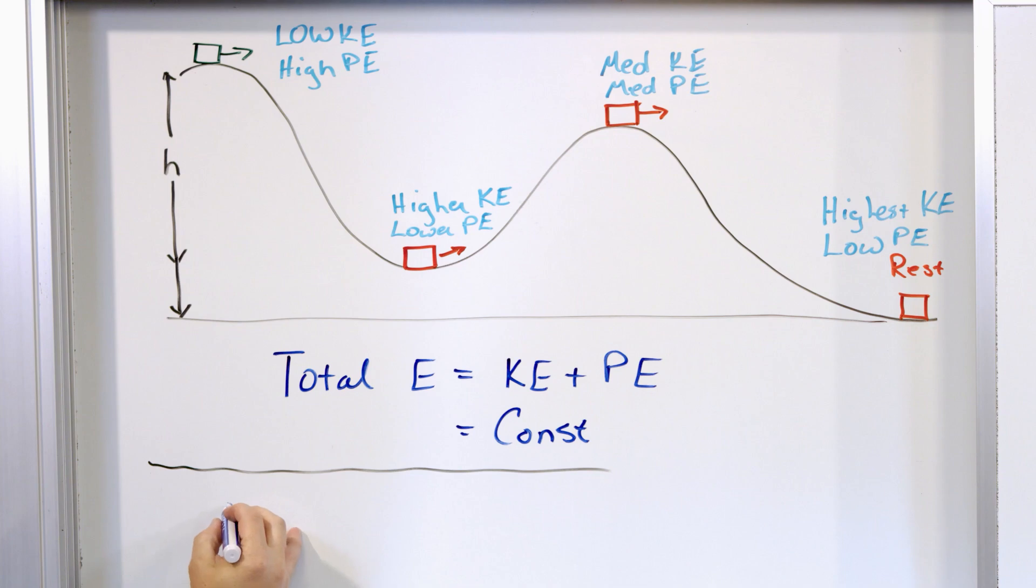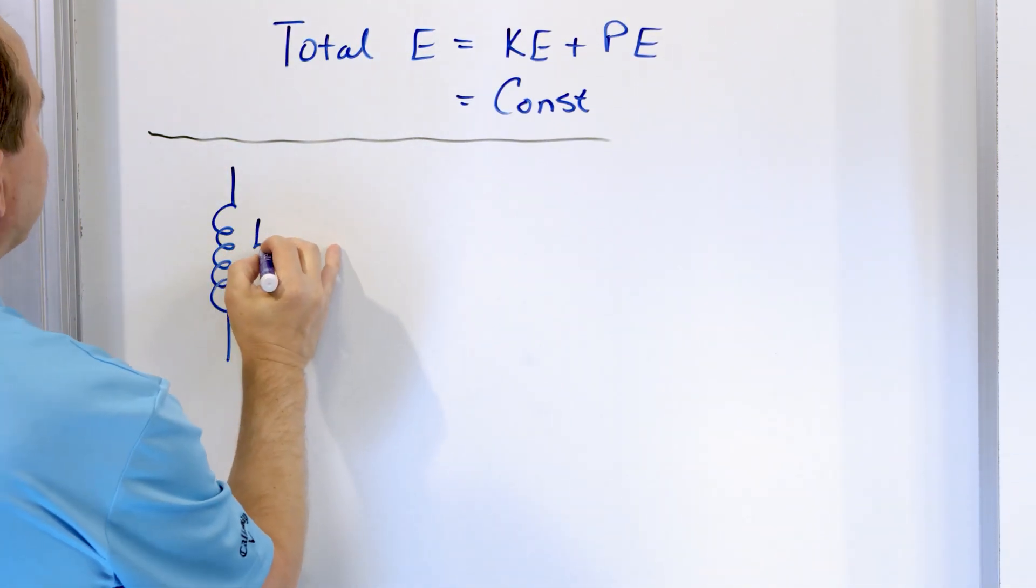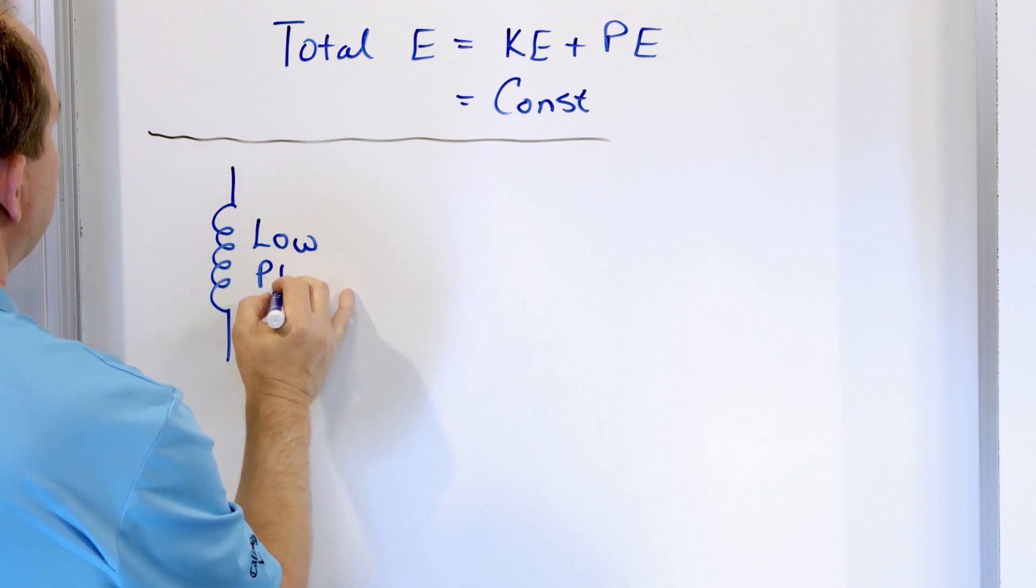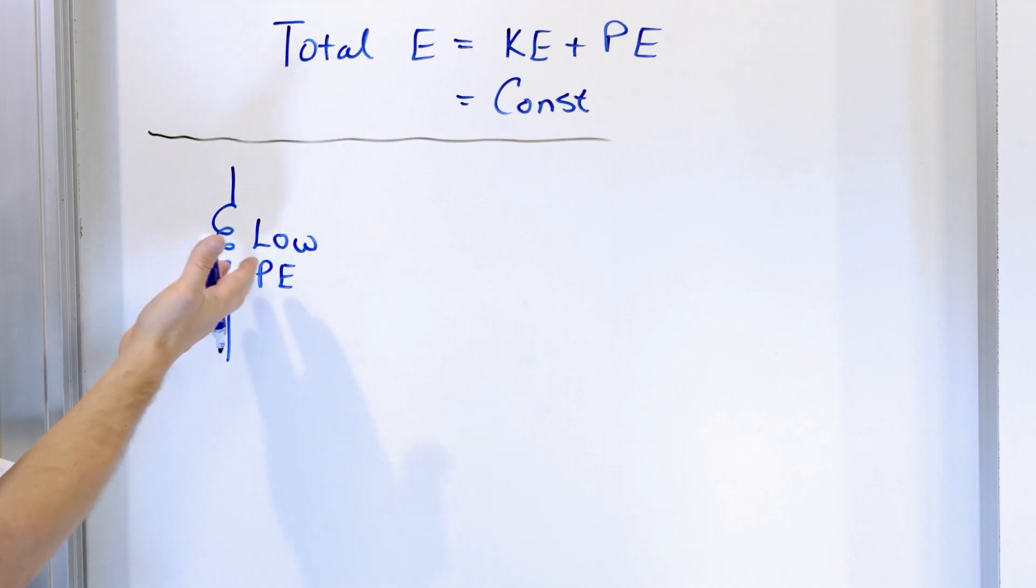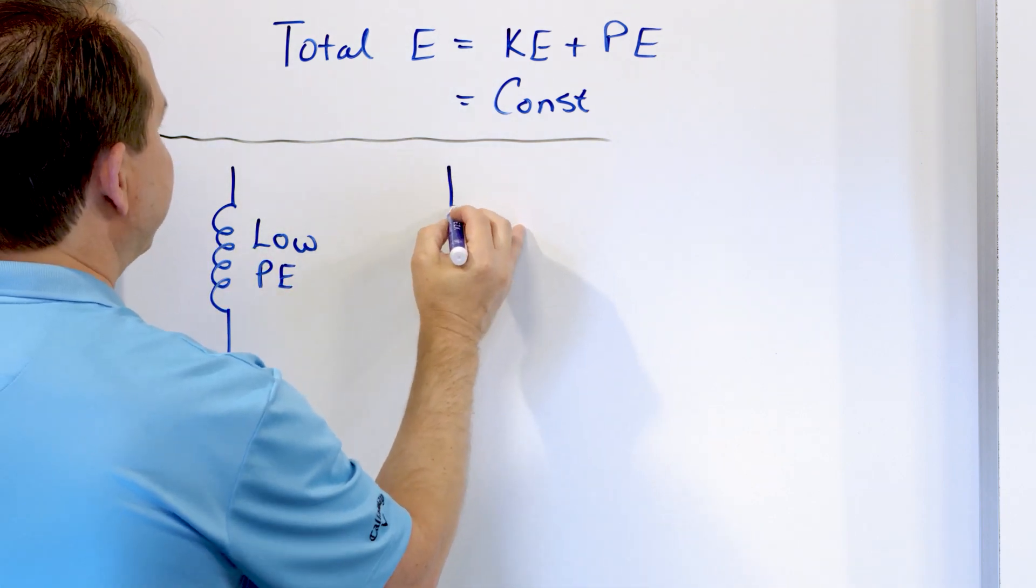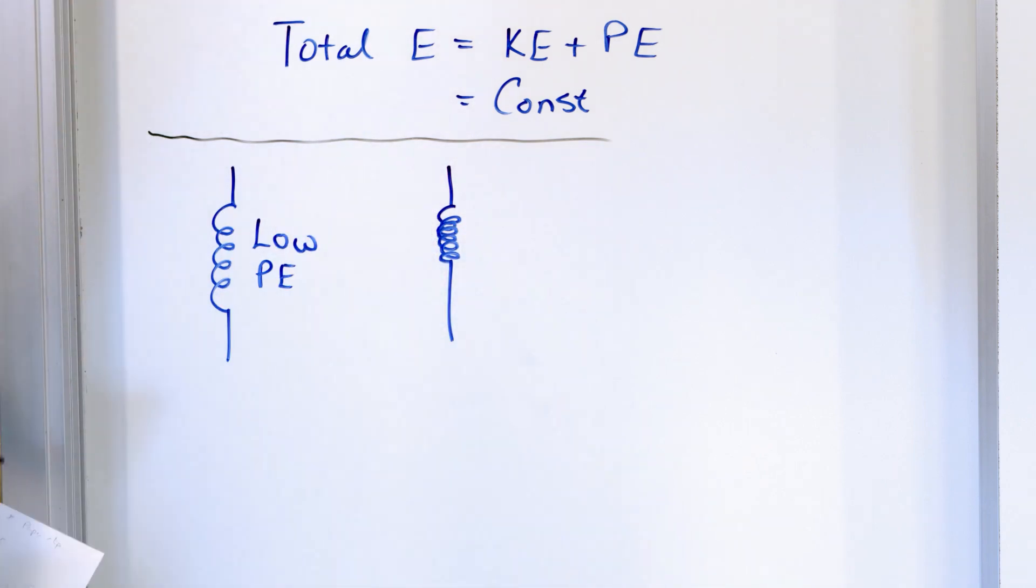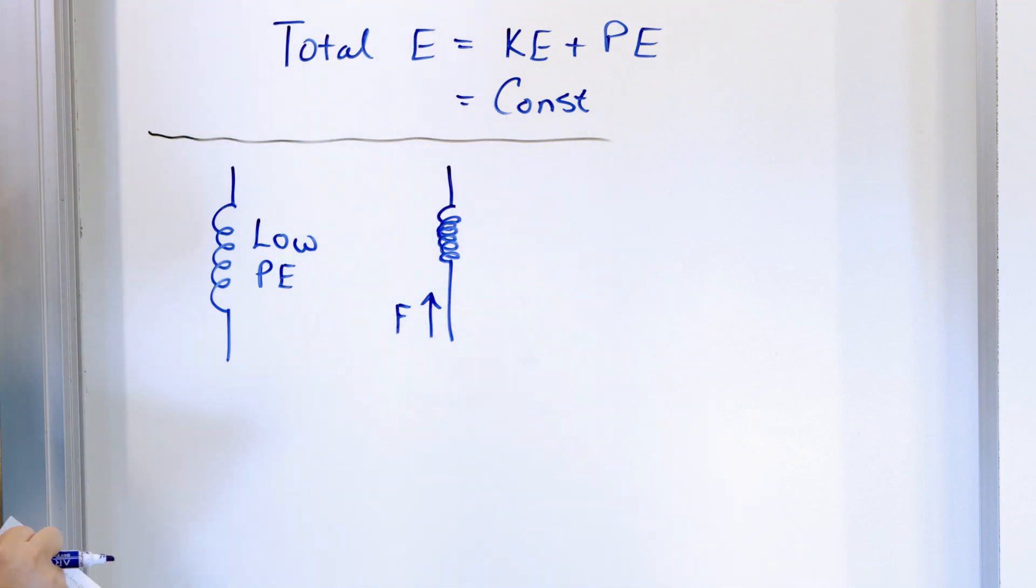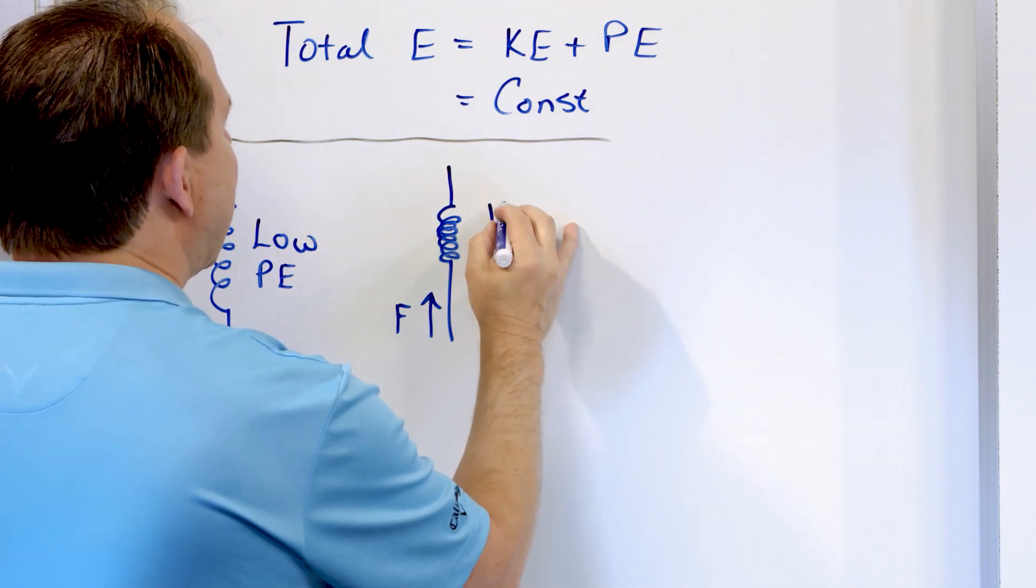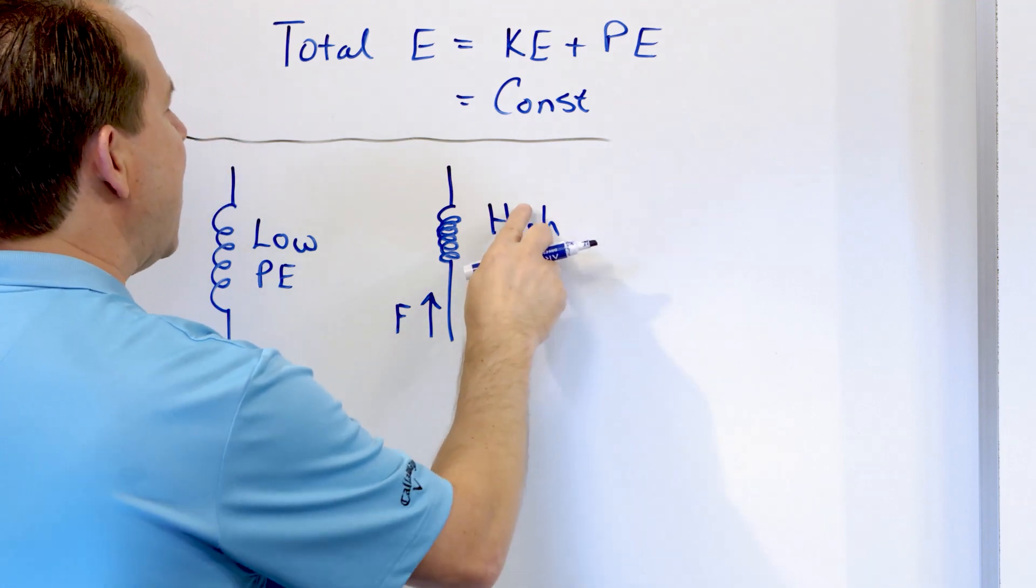You can think of a spring. You can think of the natural coiled state of a spring. And this is what we would call low potential energy because it's just kind of sitting there. It's not stretched or compressed, and so it's not going to do anything. So it has a low potential energy, maybe even zero potential energy.